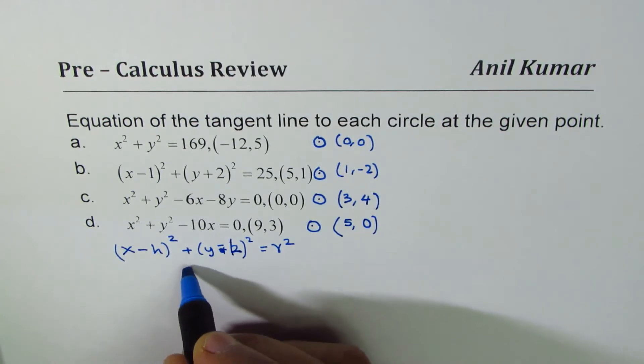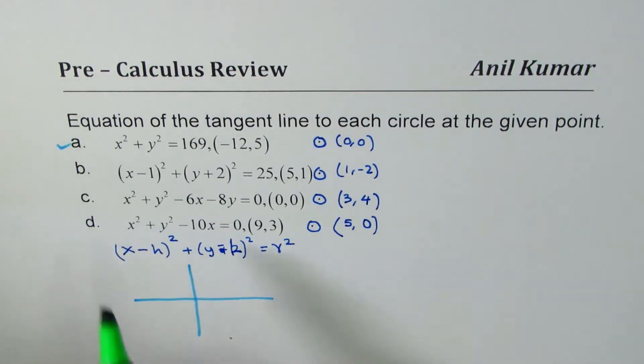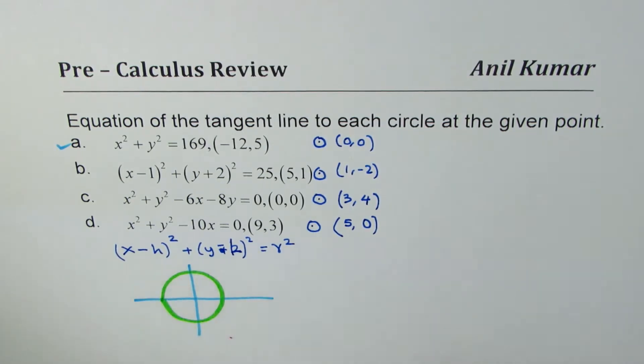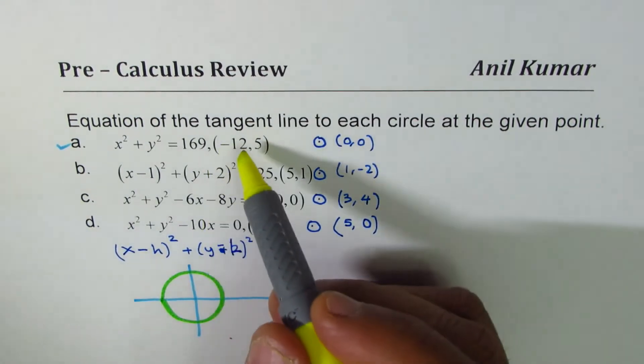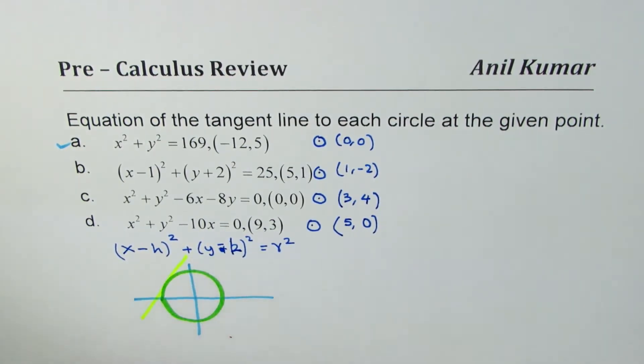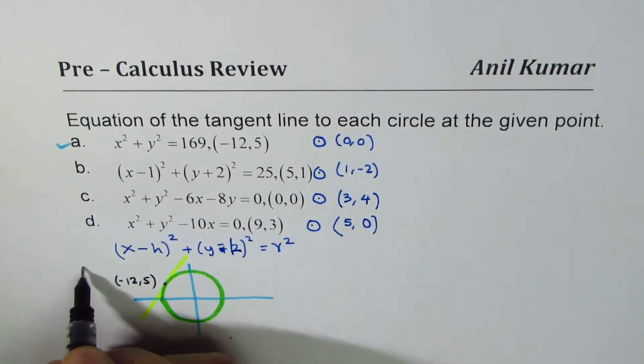So let's review the concept. Let's say we have a—I'll make a rough sketch here. I'll do the first one, x² + y² = 169. Let me make a circle here. We are given a point which is (-12, 5). The radius is 13, so that point will be somewhere here. So the tangent will be kind of like this. So we are doing part A.